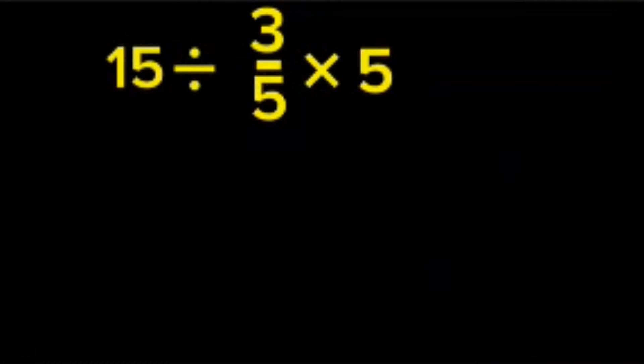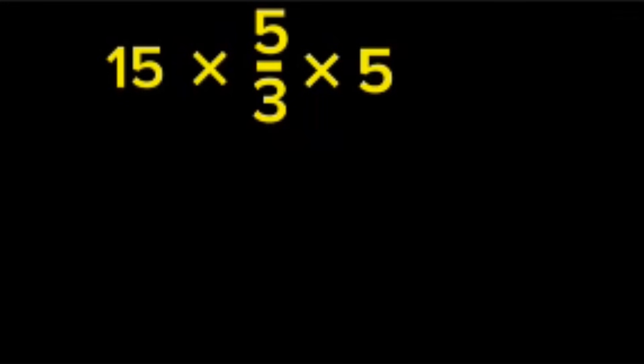Now, follow BODMAS. Step 1: 15 divided by 3 over 5 is the same as 15 multiplied by 5 over 3. This is the step most people miss.